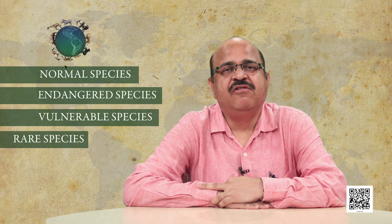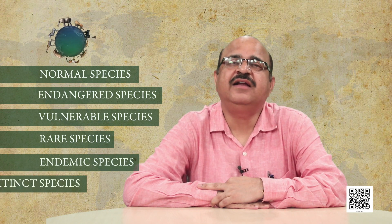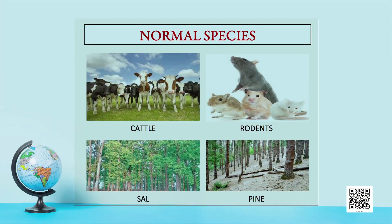For your grade level, let us learn key species categories: normal, endangered, vulnerable, rare, endemic, and extinct species. Normal species are those whose population levels are considered normal for their survival — such as cattle, sal pines, and rodents. There is no threat to their survival.